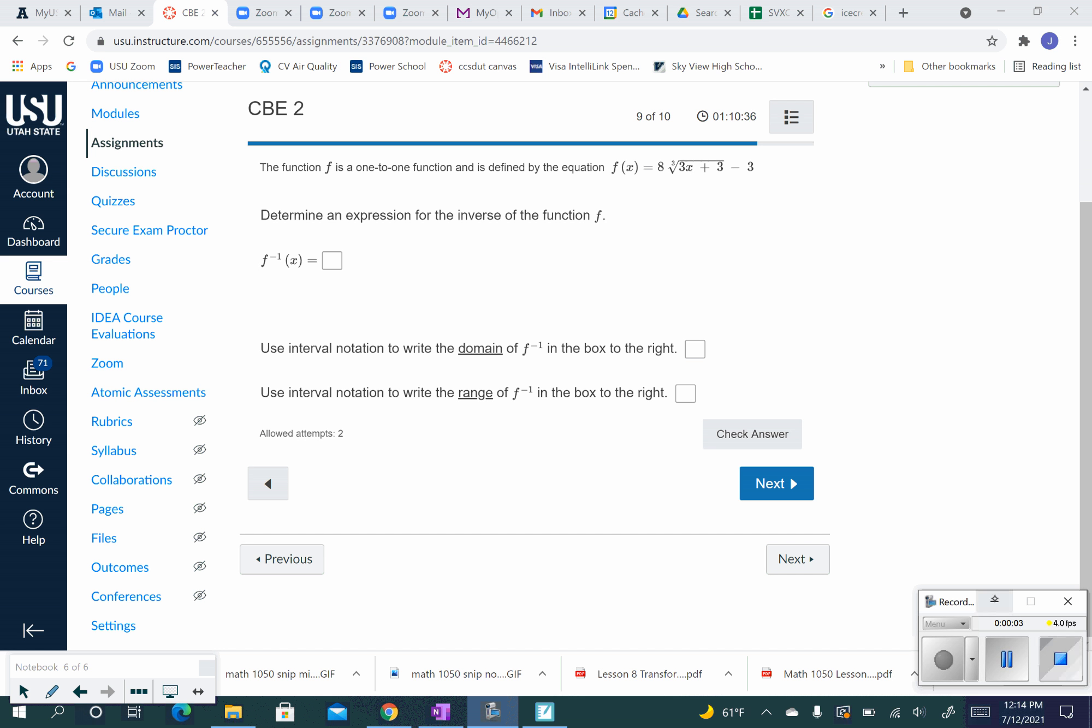So it says the function f is a one-to-one function defined by that equation. It already tells us it's one-to-one up there. If it's one-to-one, that means we can find the inverse. And that's what it wants us to do, determine an expression for the inverse of f.